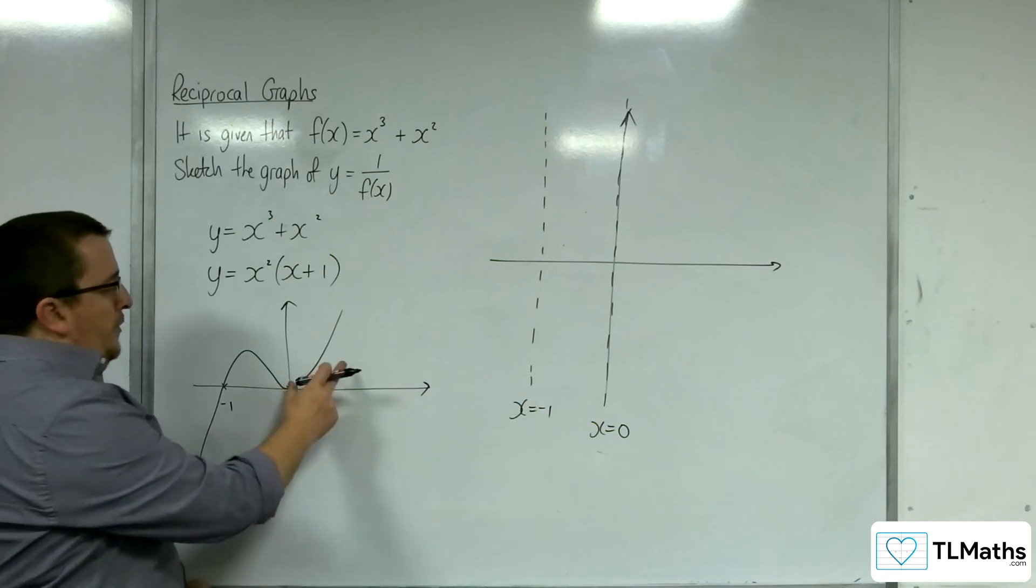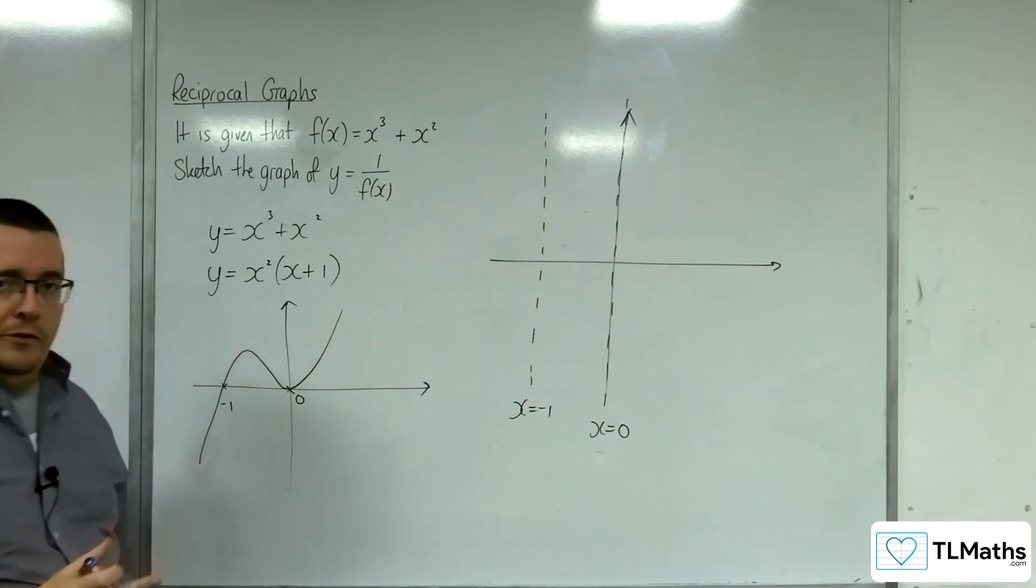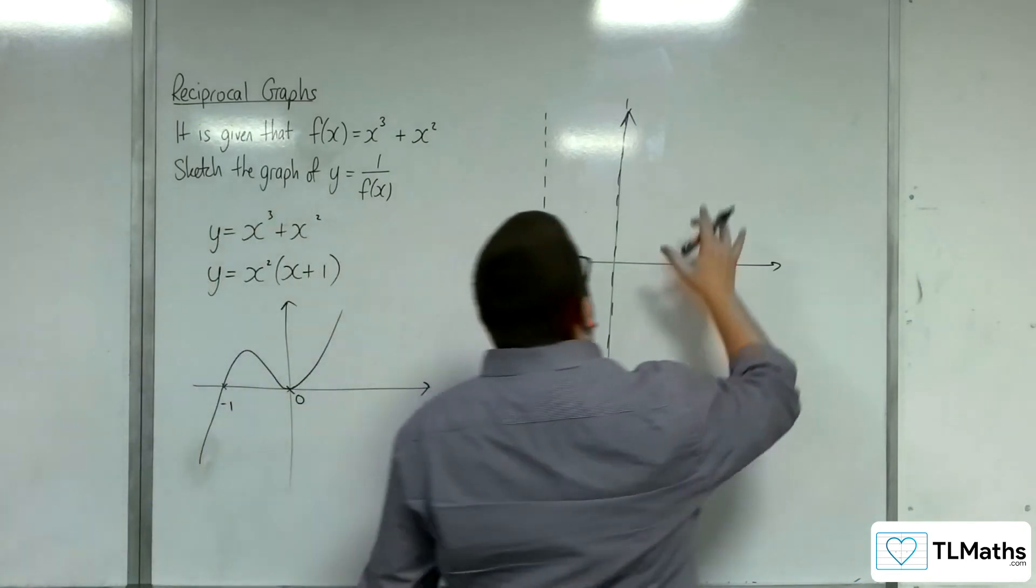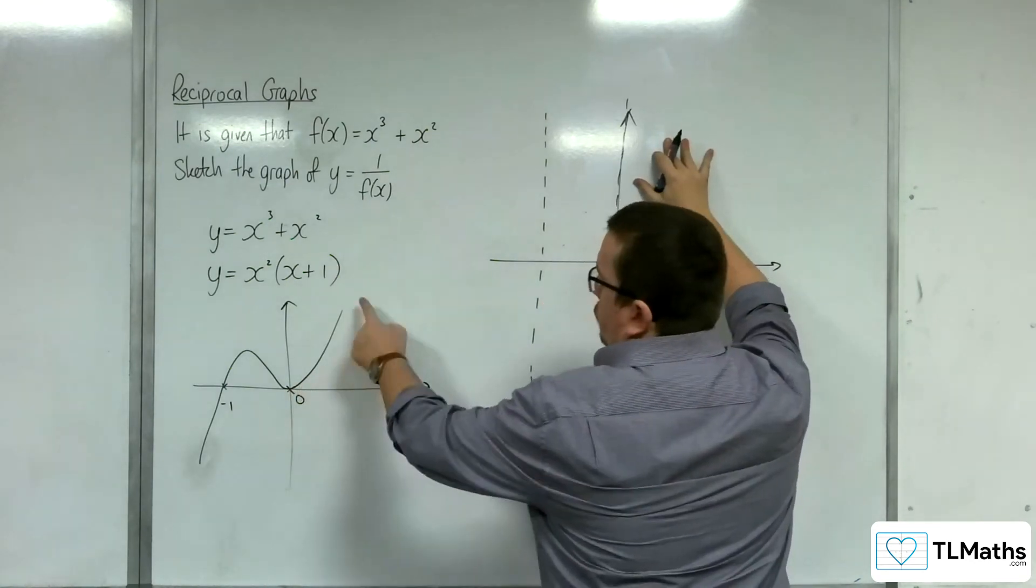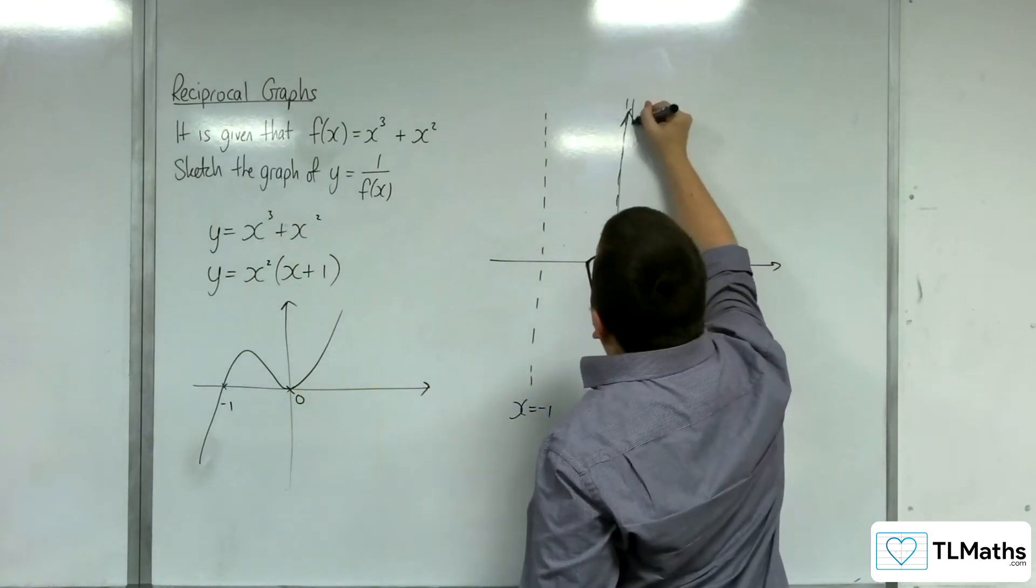Now, the graph to the right of 0 is positive. So our graph will also be positive, and we can see that it's increasing, so ours is going to be decreasing.